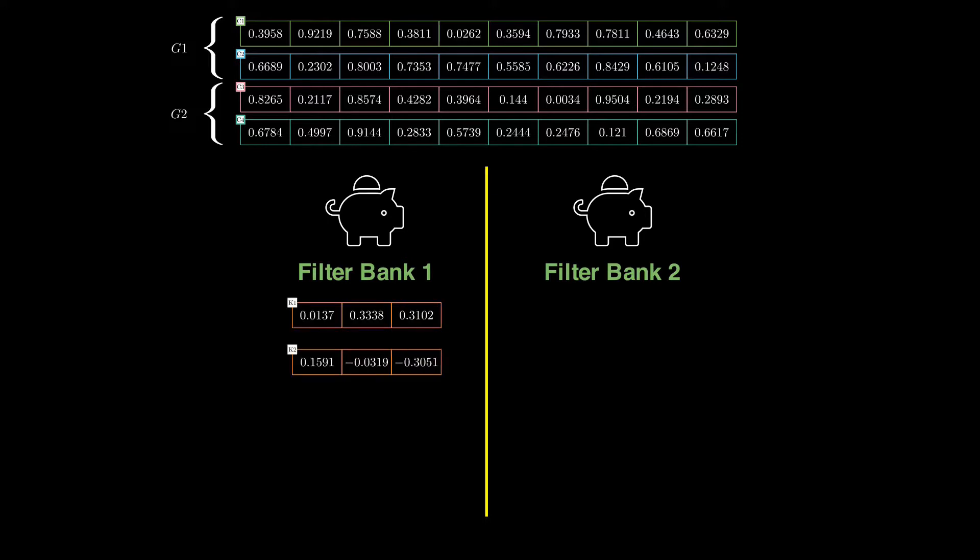We then associate group one with filter bank one. Again, as I said earlier, filter bank one will not even see the channels in group two. Since according to filter bank one, now there are only two input channels, it will only contain two kernels: K1 for channel one and K2 for channel two. Like this.